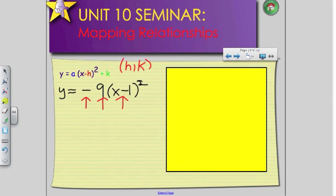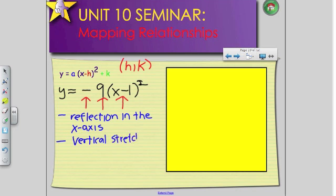What does the negative refer to? Reflection in what axis? Reflection in the x-axis, yes, reflection in the x-axis. What does the 9 refer to? What does the 9 refer to? Yes. Very good. Vertical stretch by 9.